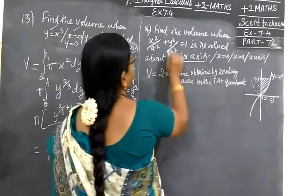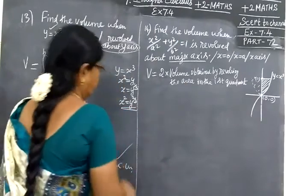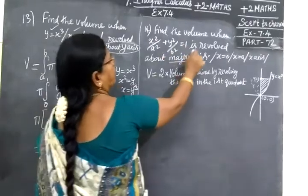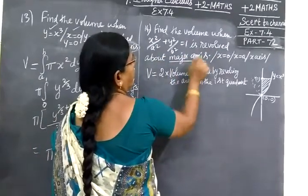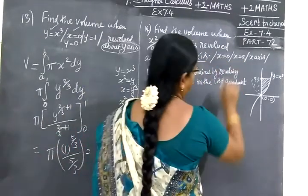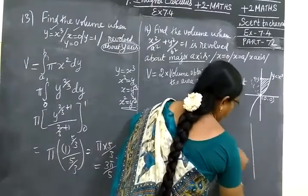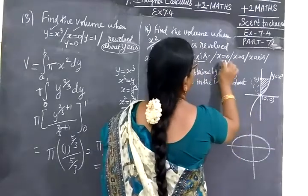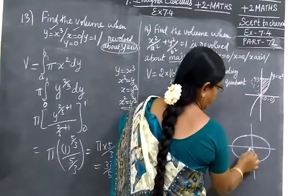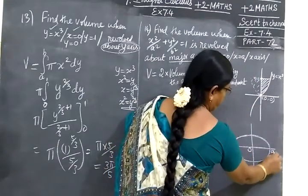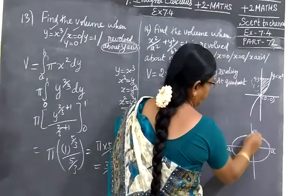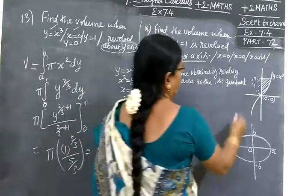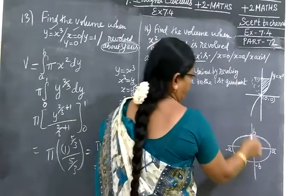Next question is given. Find the volume when the equation of an ellipse is revolved about the major axis, and the limits are given. Now we draw the ellipse. x = 0, x = a, so x ranges from -a to a. It revolves from -b to b. This we know.